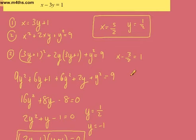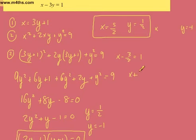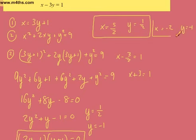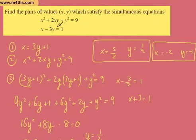If y is equal to negative 1, then what we need to do is find x. Well, x minus 3y, and y is negative 1, so it's x plus 3 is equal to 1. So subtracting the 3, x would equal negative 2. So those are your two solutions for x and y — the pairs of values x and y that satisfy the simultaneous equation.